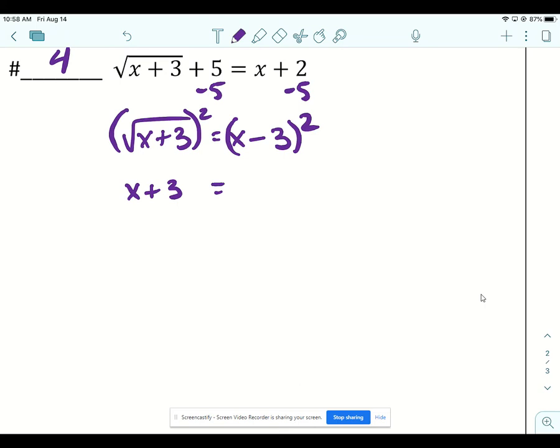On the right we have to square x minus 3 as a quantity. So you have two options. You can actually multiply x minus 3 times itself, distribute the x, distribute the negative 3.